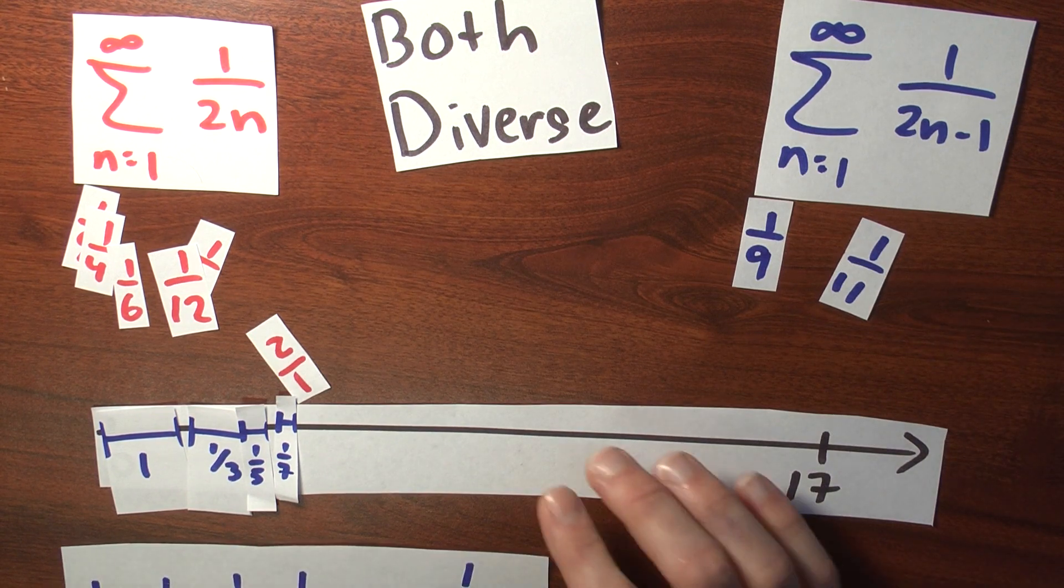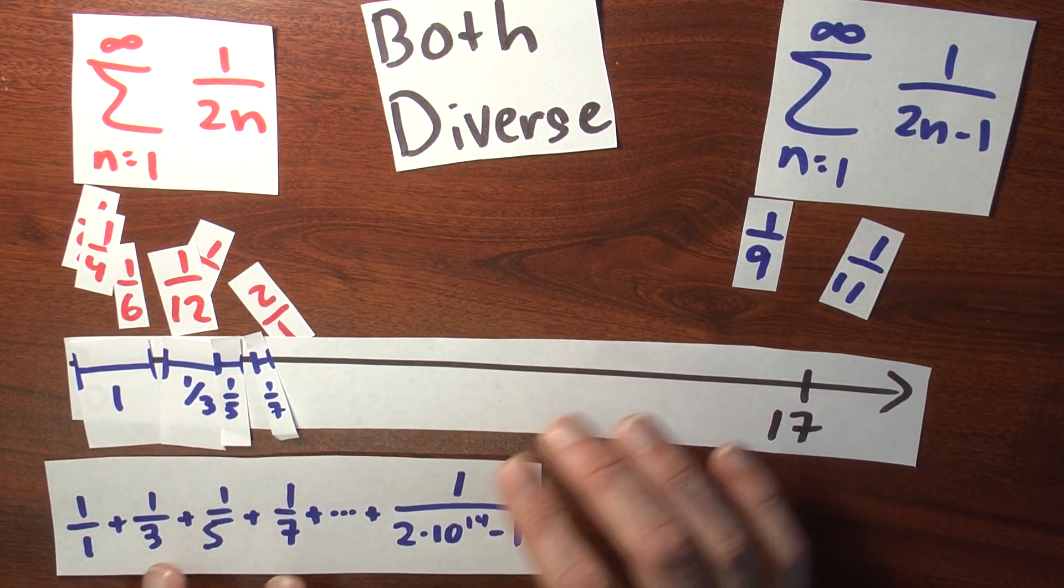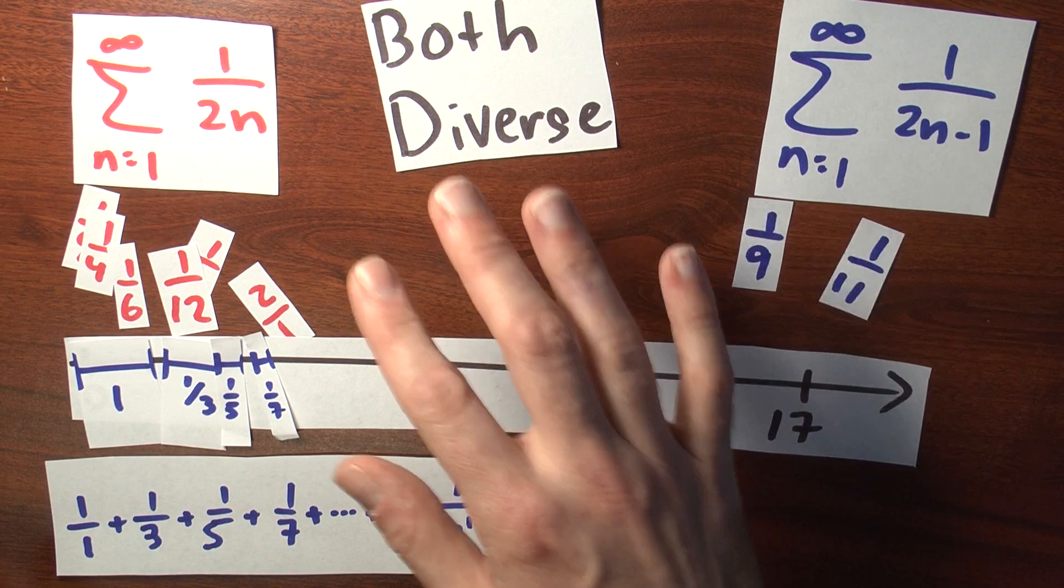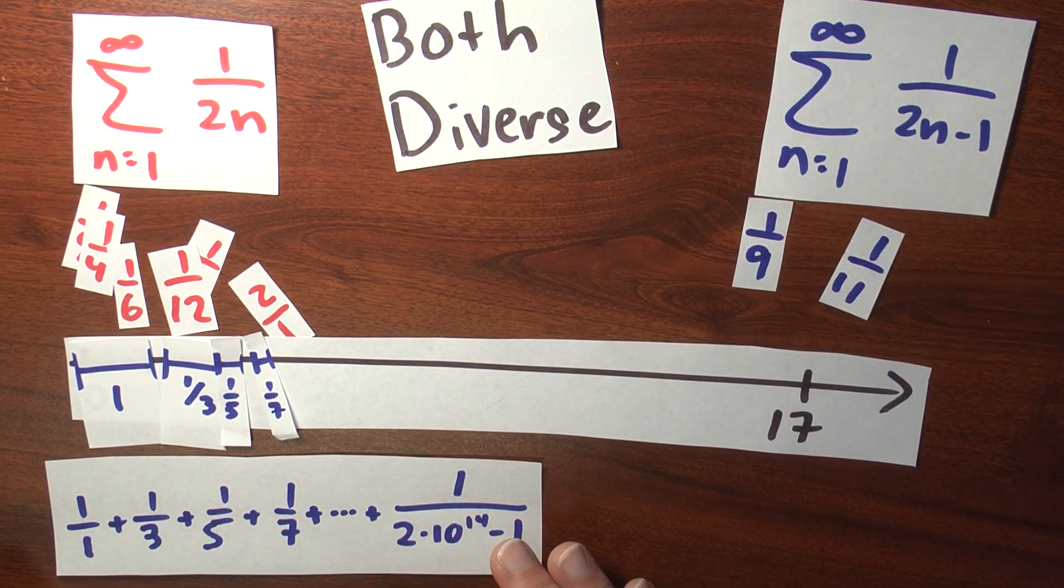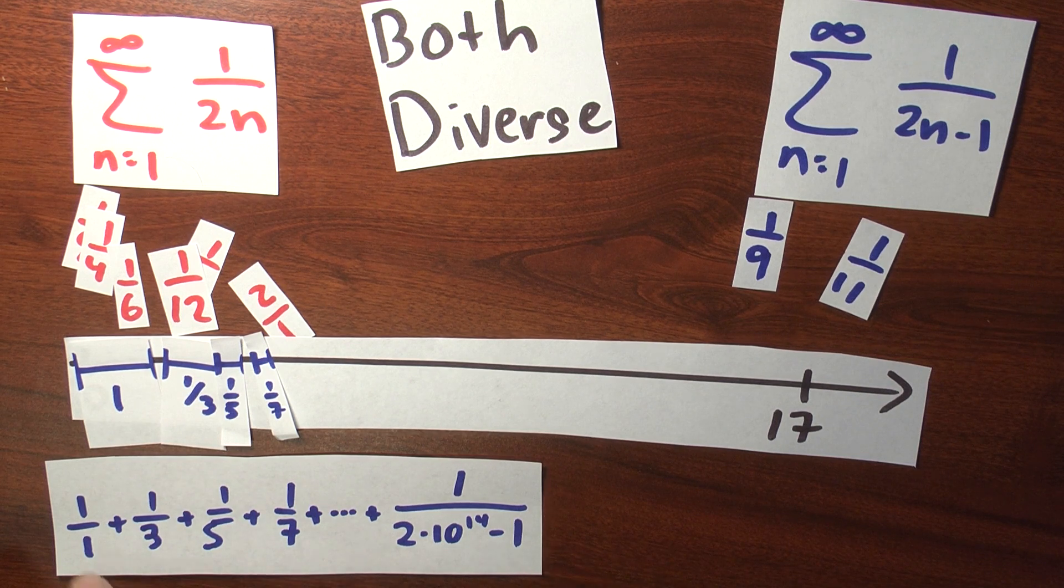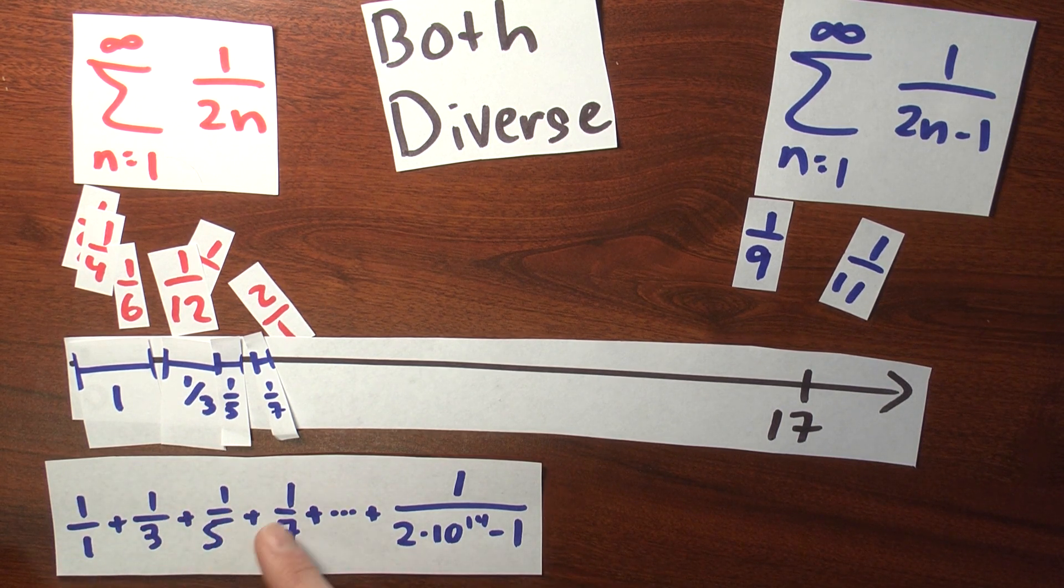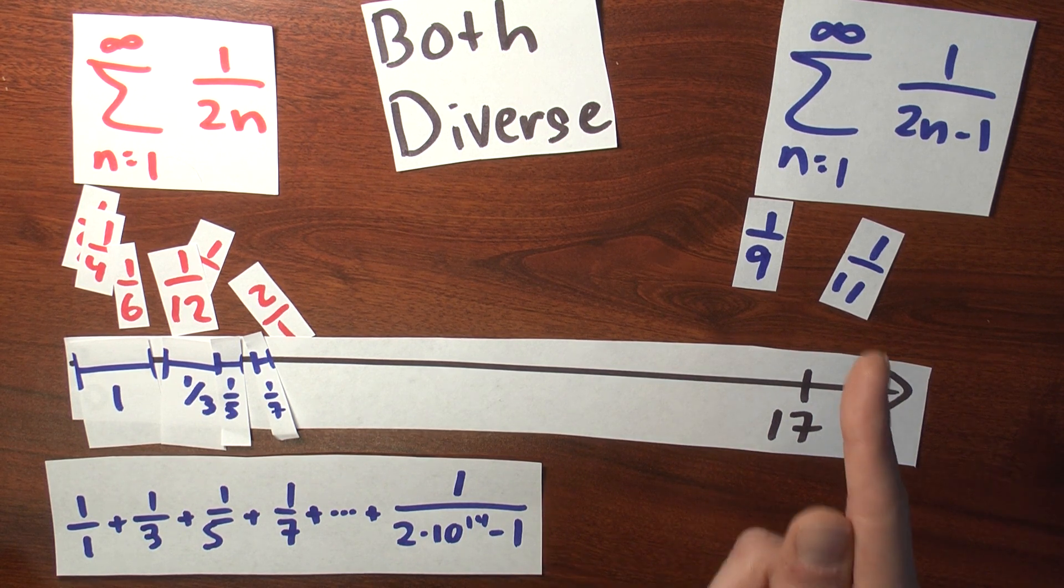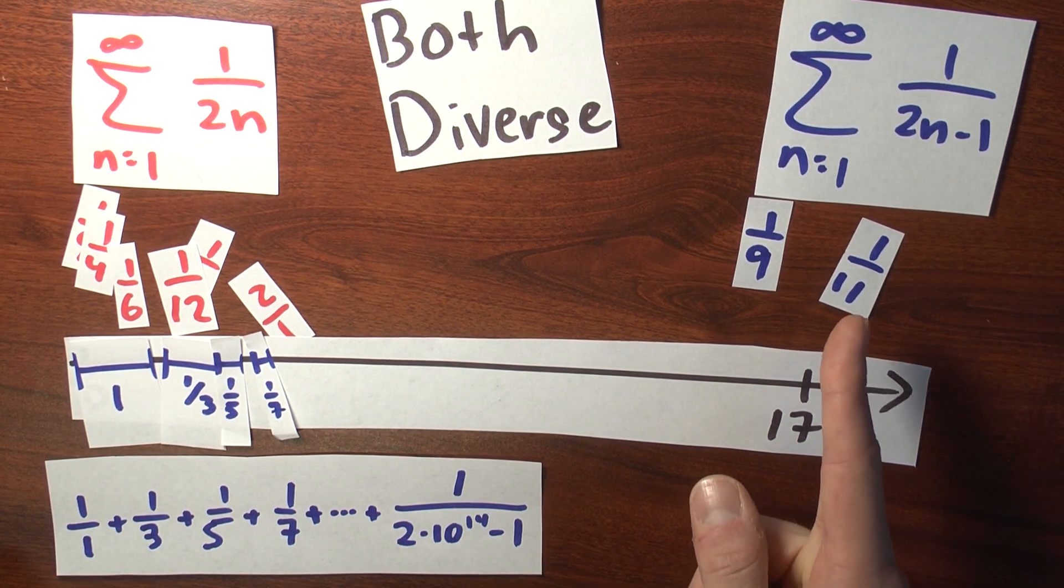So this is how I'm going to start. I'm trying to write down the same terms as the alternating harmonic series. But I want a series now that converges to 17, and this is how I'll start. I'll add 1 over 1 plus 1 third plus 1 fifth all the way to 1 over 2 times 10^14 minus 1, and that'll land me just to the right of 17.